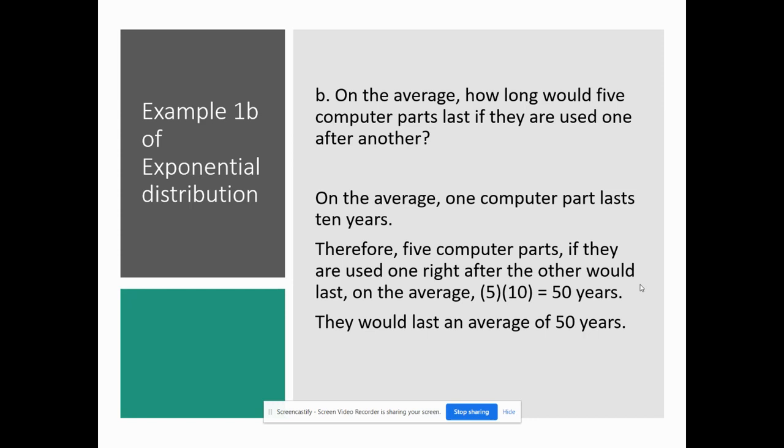On average, how long would 5 computer parts last if they were used one after each other? So remember, we knew on average 1 computer part lasts 10 years. So if they're going to use them – so computer part A, then B, then C, then D, then E – so all you're going to do is multiply the 5 computer parts times the average year, so you get 50 years.